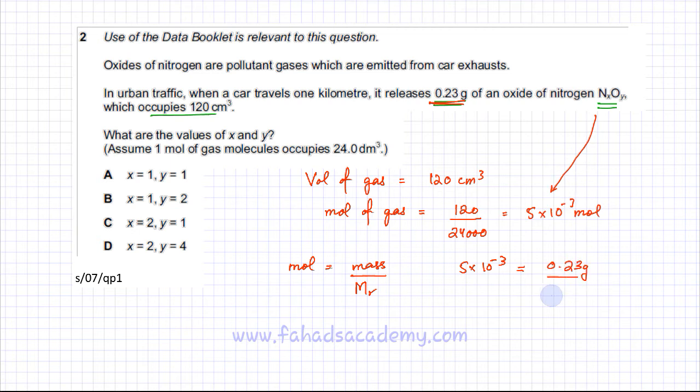I already know the moles, it's 5×10⁻³ moles, and I'm given the mass, which is 0.23 grams. The Mr would be, using my calculator, 0.23 divided by 5×10⁻³, and the answer is 46.